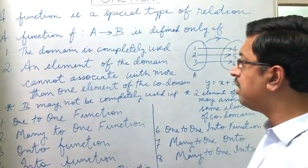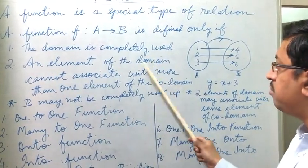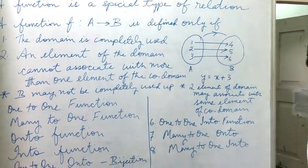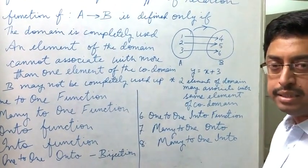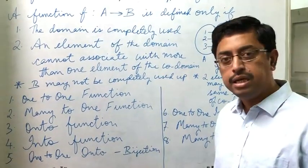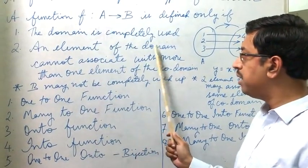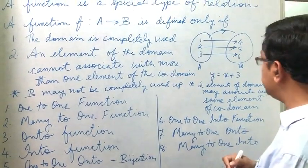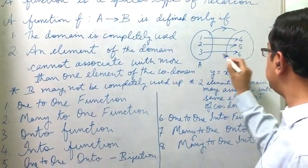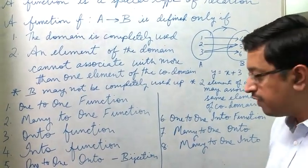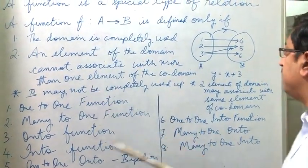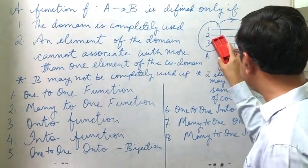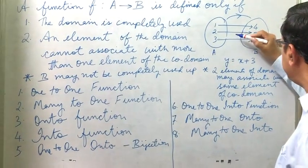The second condition for a function is that an element of the domain cannot associate with more than one element of the co-domain — set B is the co-domain. For example, if 3 is going to 6, then 3 cannot also go to 5. If it associates with more than one element, it is not a function. In our example, each element associates with only one element, so it is a function.